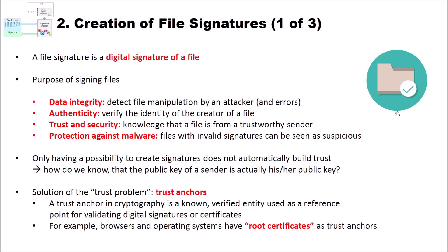Now let's have a look at creation of file signatures. A file signature is a digital signature of a file computed in the way we have just seen. The purposes of signing files are: first, data integrity — you can detect file manipulation by an attacker and errors introduced into the file. Second, authenticity — you can verify the identity of the creator of the file. Third, trust and security — you gain knowledge that a file is from a trustworthy sender. And finally, protection against malware — files with invalid signatures can be seen as suspicious, as they could be altered with malware, so when you receive an invalid signature you should be very careful.